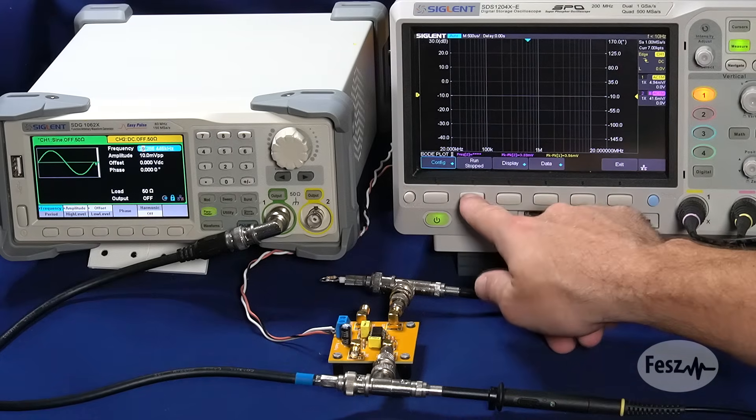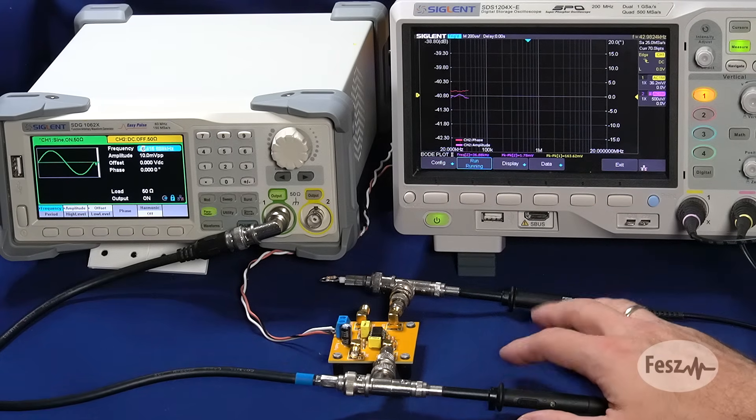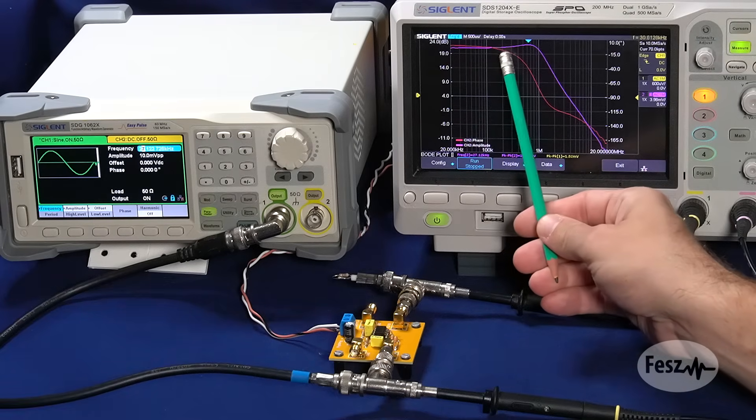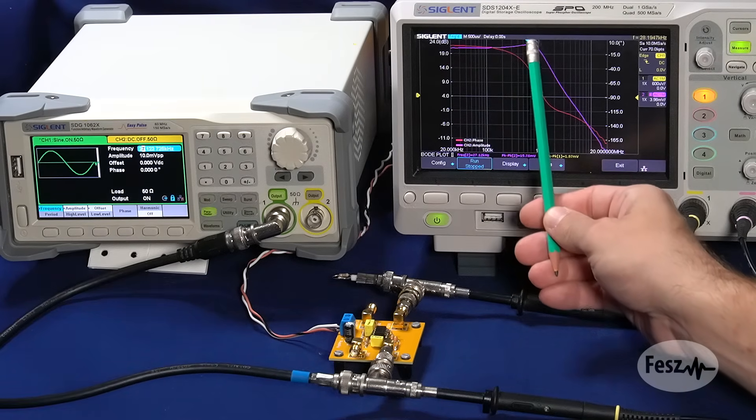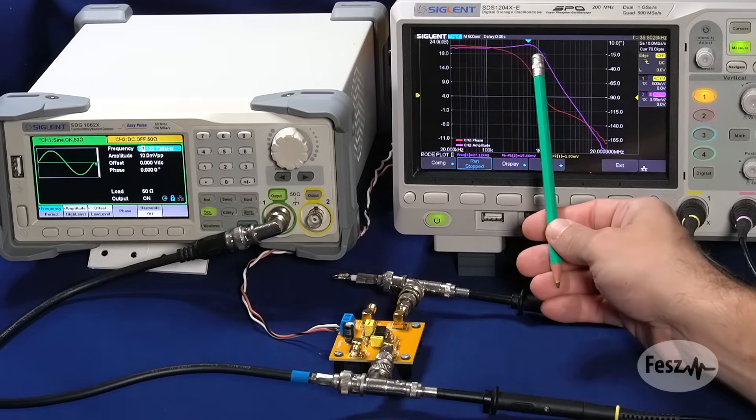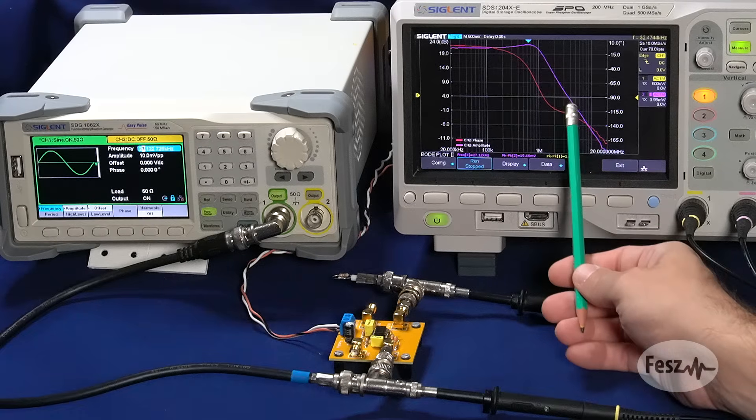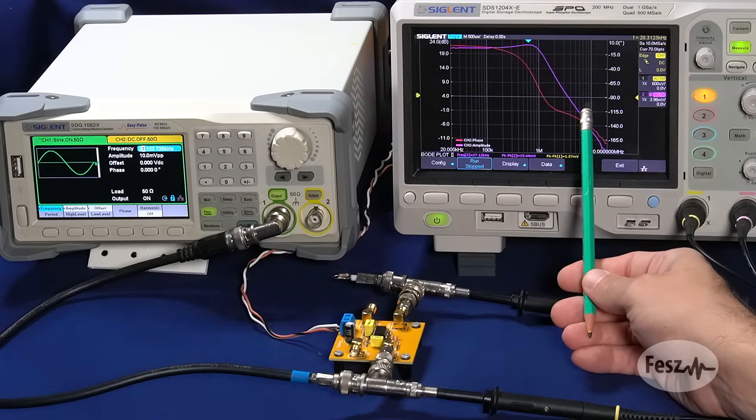So now, if we do run the measurement and let it conclude, we can observe the flat gain appearing up to a point, and then, in this particular circuit's case, there is a bit of gain peaking, and then the gain drops off.